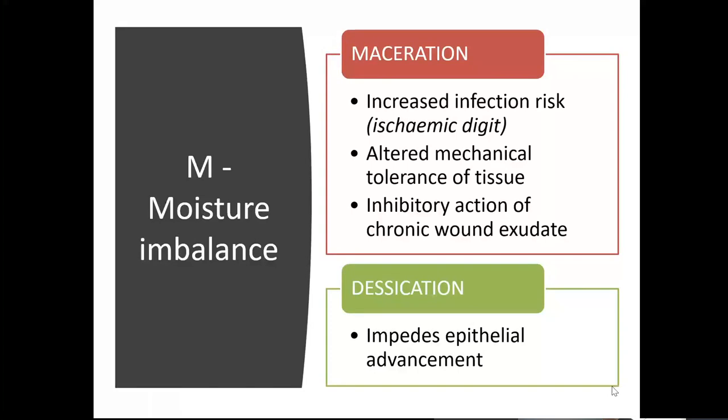Moving on from infection to wound management elements, Philip touched on this in the TIME acronym, where M in TIME stands for moisture imbalance. We need to think about it as a seesaw rather than a jigsaw, where we've got maceration at one end with increased infection risk. You get altered mechanical tolerance of the tissue due to maceration, and an inhibitory action of chronic wound fluid which can cause damage to the peri-wound and low-grade inflammation, reducing the chances of wound healing.